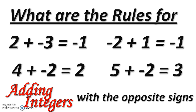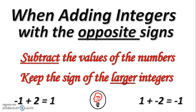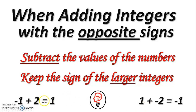Look at the problems we've done and see if we can discover the rules. When adding integers with opposite signs, you subtract the values of the numbers. Using the example of one and two: you subtract the smaller from the larger — both times, two and one subtract to make one. But the answer has the same sign as the larger integer in the problem. If the larger integer is negative, the answer is negative; if the larger integer is positive, the answer is positive.